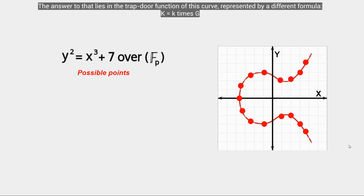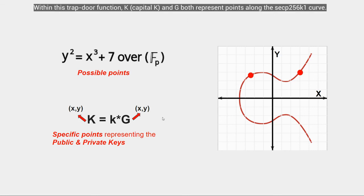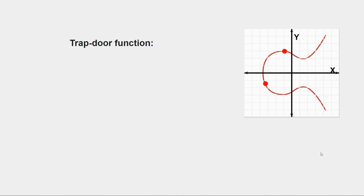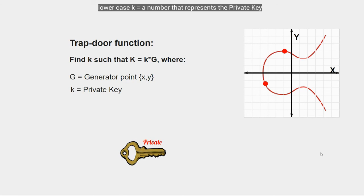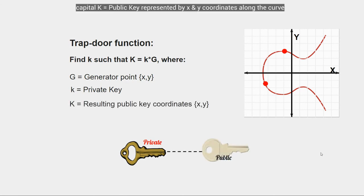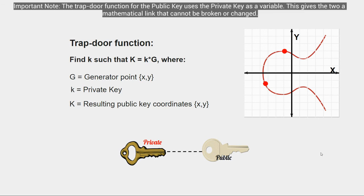How exactly do we get the public and private key? The answer lies in the trapdoor function of this curve, represented by the formula K = k × G. Within this trapdoor function, K and G both represent specific points along the curve. The trapdoor function is: find lowercase k such that K = k × G, where G is a generator point represented by x and y coordinates along the curve, lowercase k is the private key, and capital K is the resulting public key represented by coordinates along the curve.